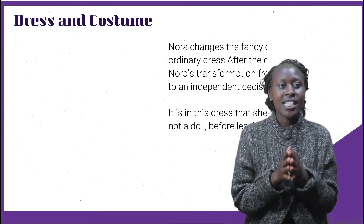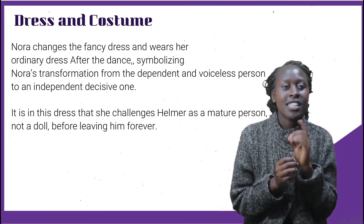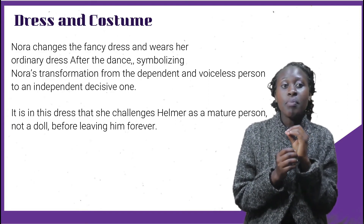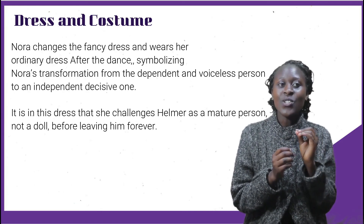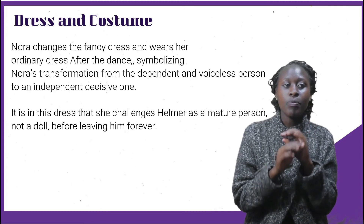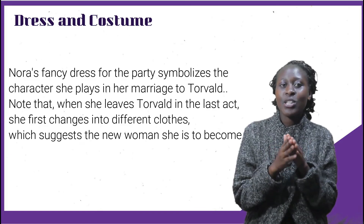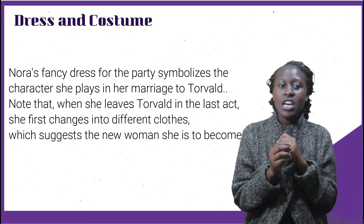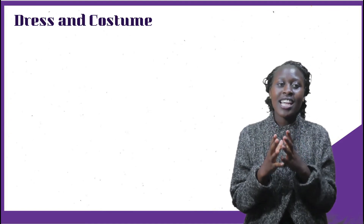Dress and costume is the last symbol in the play. Nora changes from her fancy dress and wears her ordinary dress after the dance. This symbolizes Nora's transformation from a dependent and voiceless person to an independent, decisive person. It is in this ordinary dress that she challenges Helmer as a mature person, not a doll, before leaving him forever. Her fancy dress for the party symbolizes the character she plays in her marriage to Torvald. When she leaves in the last act, she first changes into different clothes, suggesting the new woman she is to become.